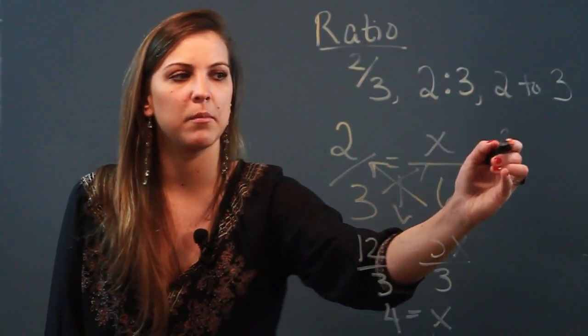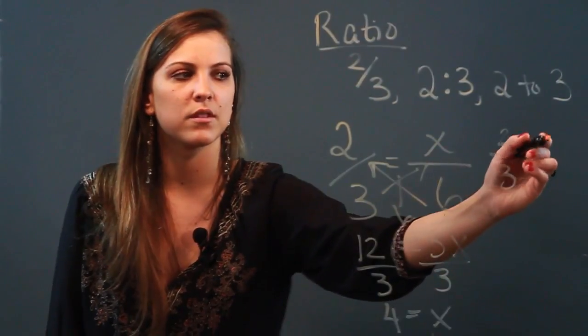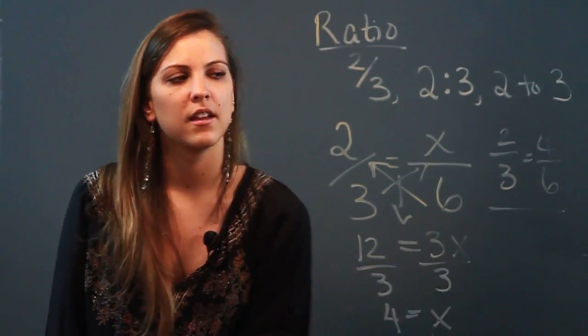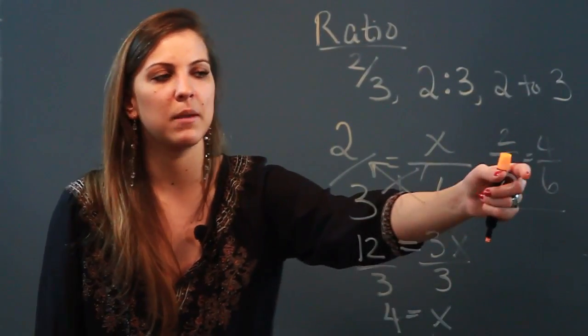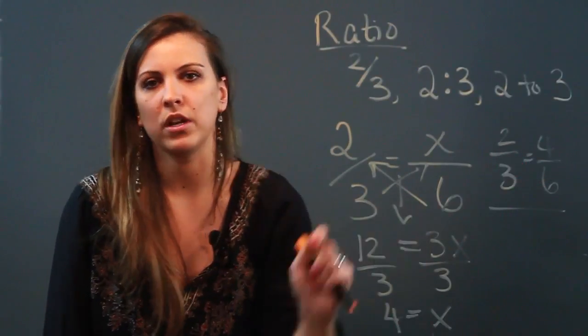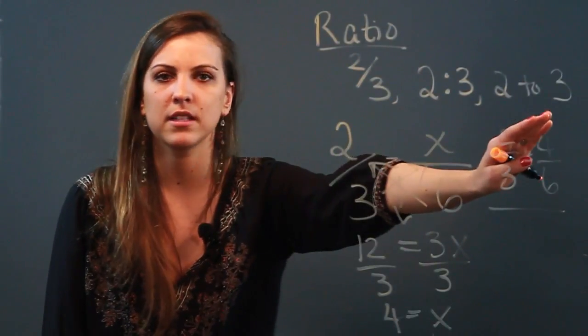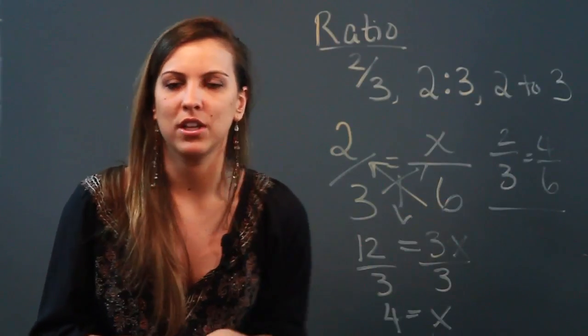So for this to be a proportion, it would be two-thirds equals four over six. And the reason this is a proportion is because it's two equal ratios. So ratio, just the comparison of numbers. Proportions, two equal ratios.